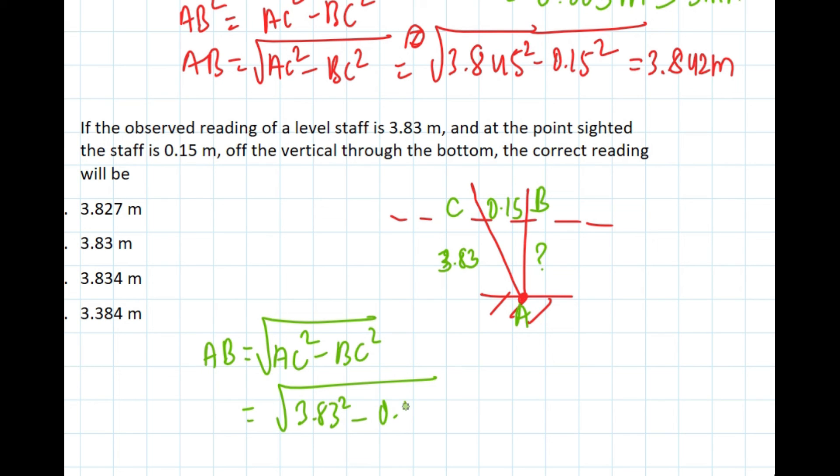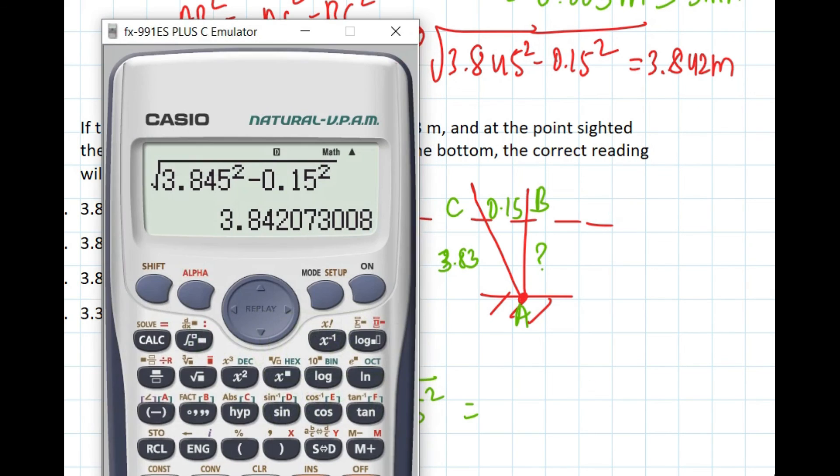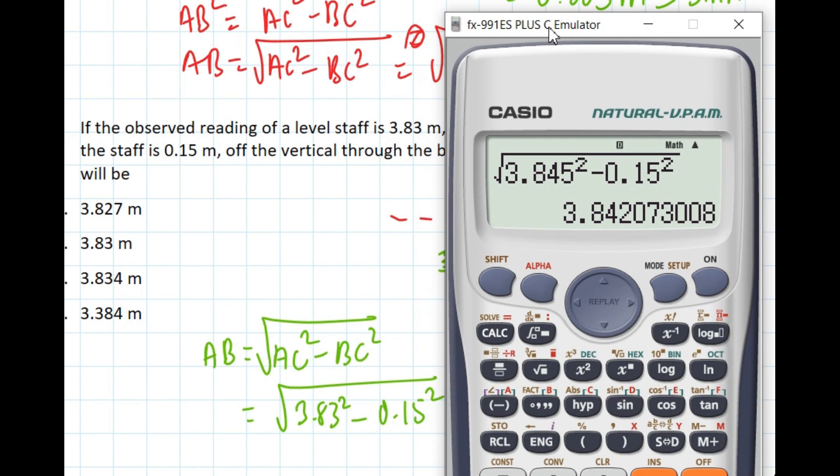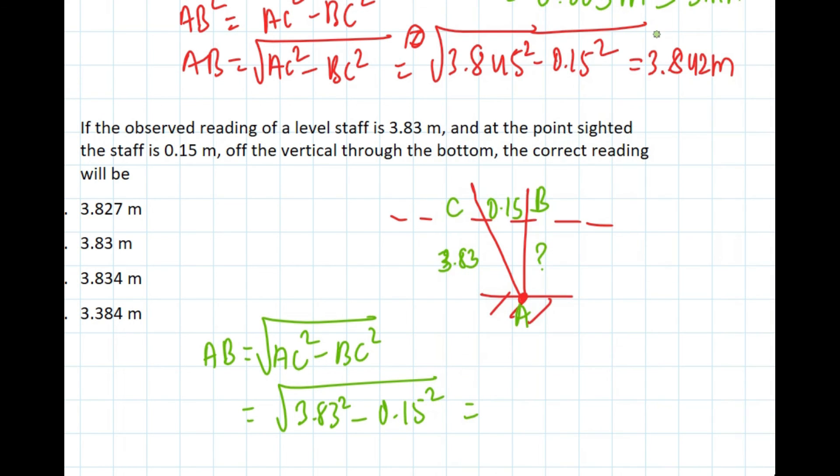So our answer will be √(3.83² - 0.15²). Our answer is 3.827 meters.